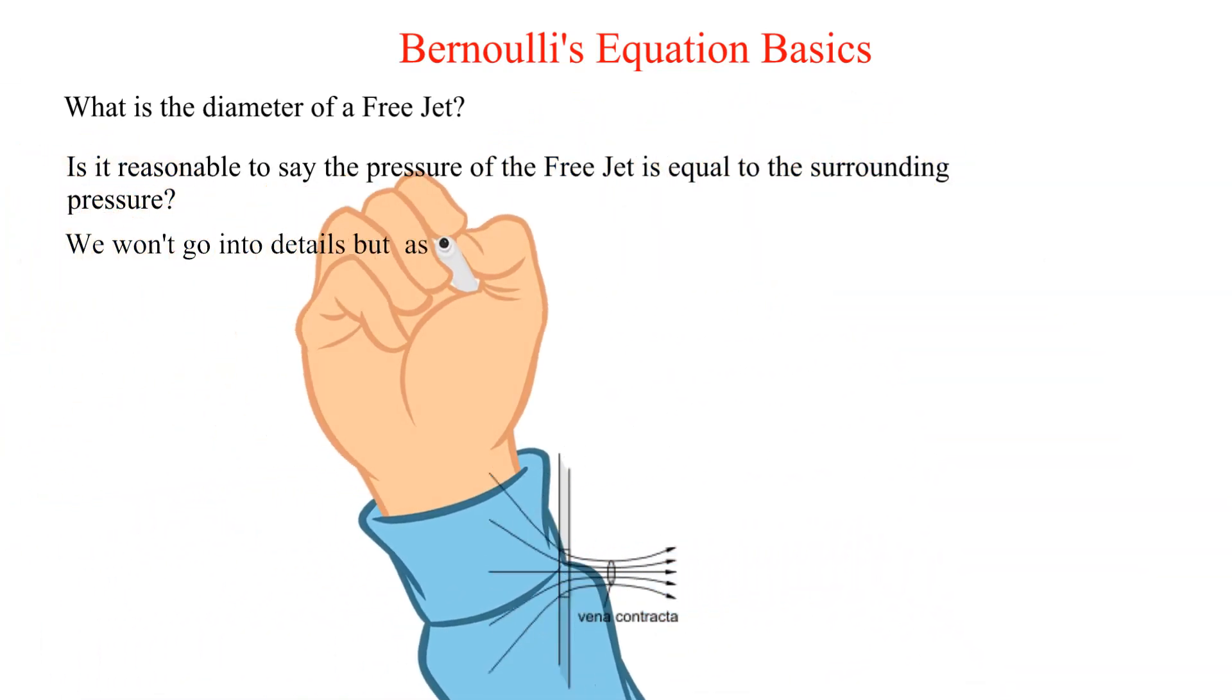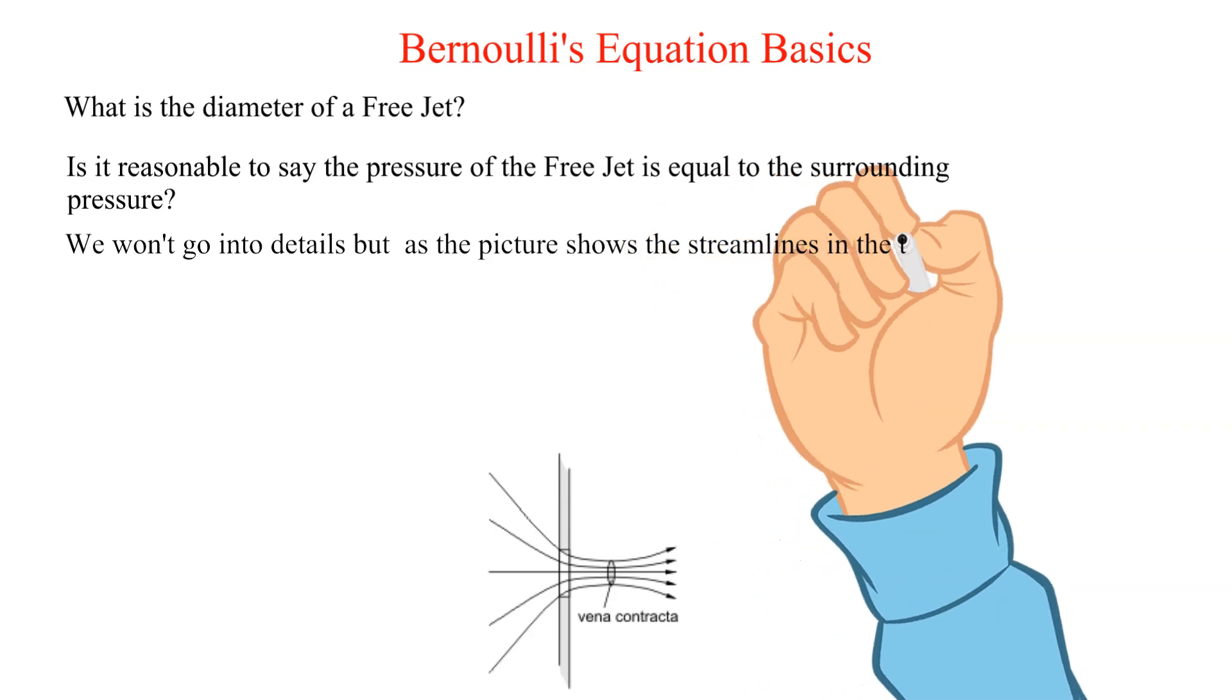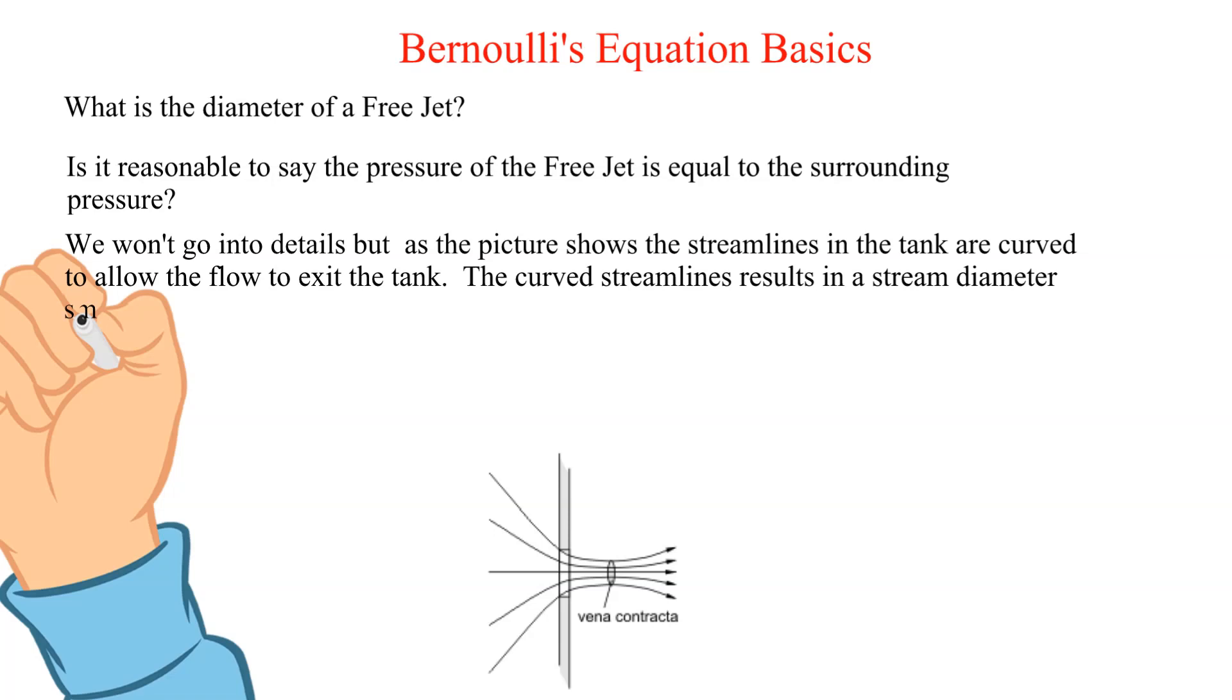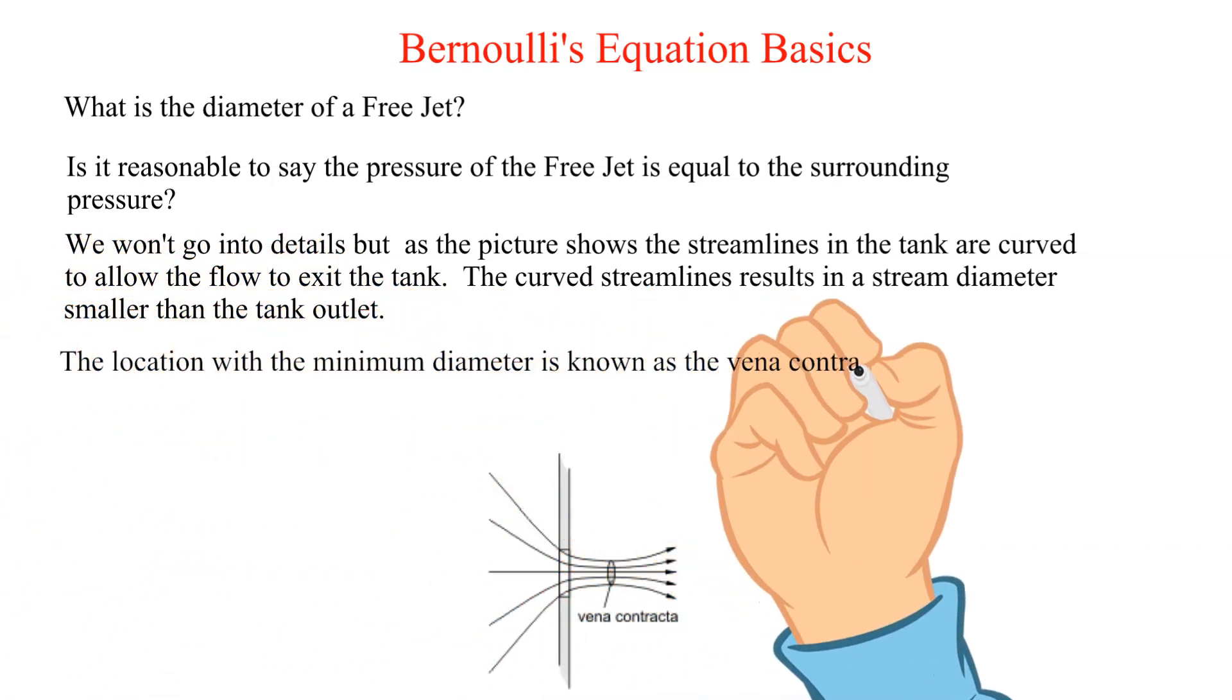We won't go into details but as the picture shows the streamlines in the tank are curved to allow the flow to exit the tank. The curved streamlines result in a stream diameter smaller than the tank outlet. The location with the minimum diameter is known as the vena contracta.